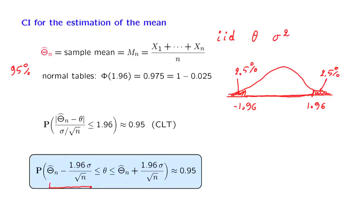We think of this quantity here as the lower end of the confidence interval. This quantity here is the upper end of the confidence interval. And this statement tells us that there is probability approximately equal to 95% that the confidence interval constructed this way contains the true value of the unknown parameter. So this is how we obtain a 95% confidence interval.